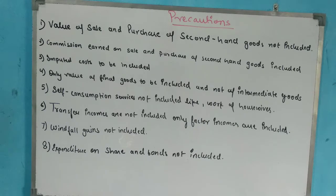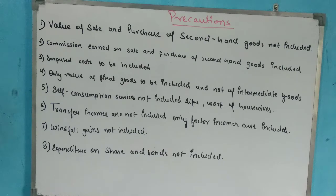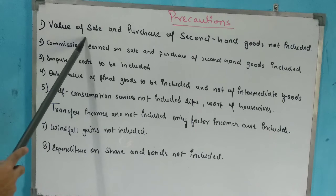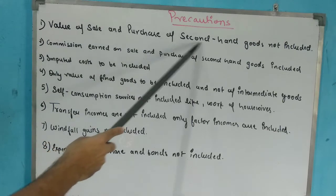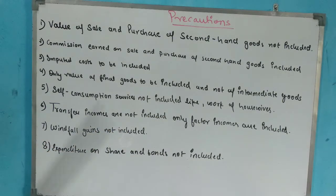A basic concept to remember: whatever is added in the formulas must be included in national income calculation, and whatever is subtracted must not be included. Now, the first precaution: the value of sale and purchase of second-hand goods is not included in national income.